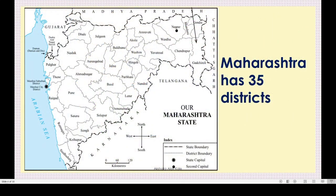Maharashtra has 35 districts. You can see here on this map - for example, Thane, Pune, Mumbai, Palghar, Nasik, Ahmadnagar, Bid, Latur, and so on. There are 35 districts in Maharashtra. The neighboring states are Gujarat, Madhya Pradesh, Chhattisgarh, Telangana, Karnataka, Goa, and on the west side is the Arabian Sea. These are all our neighbors.